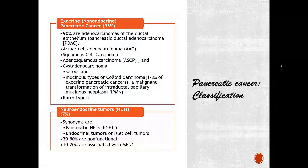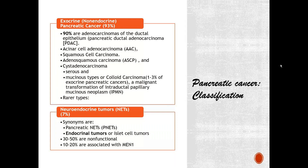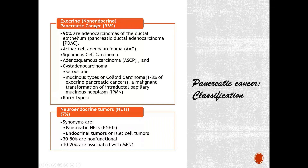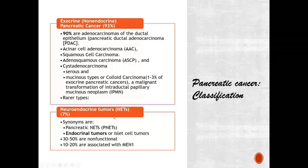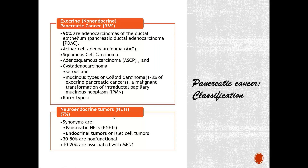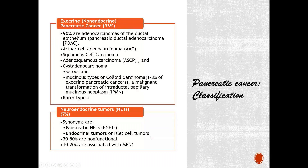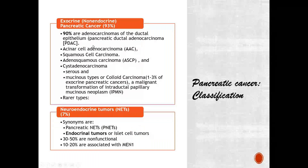Coming to pancreatic cancer and its classification, broadly there are two types: exocrine and endocrine. Malignancy can arise from either part. Almost 93% of pancreatic cancers are exocrine cancers, and only 7% are endocrine or neuroendocrine tumors, known as NETs. We'll concentrate on the exocrine tumors, as they are by far the more common type encountered in clinical practice.